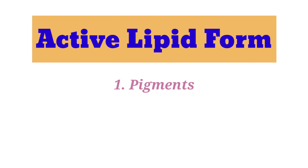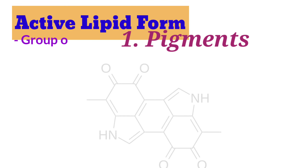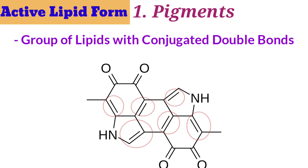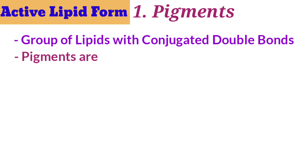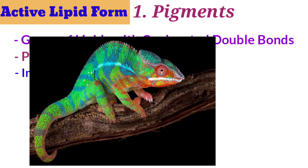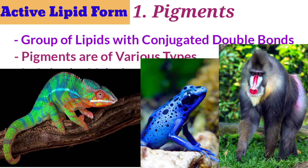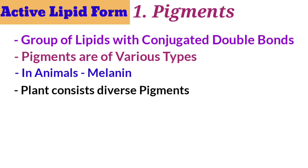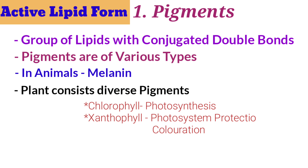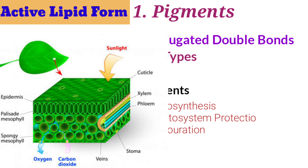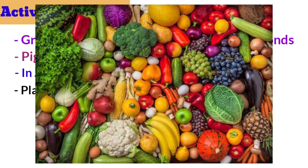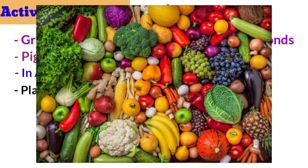The active form of lipids includes the group of lipids with conjugated double bonds, commonly called pigments. These pigments are of various types. In animals they give color to the organism, to the hair and to the skin. In plants, these pigments perform very diverse roles such as light absorption, on which the whole plant photosynthesis is dependent, as well as coloration production in fruits and flowers.